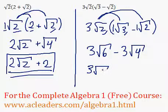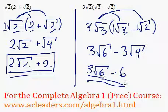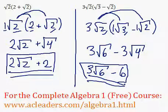3 root 6. Root 6, we can't really do anything to that, because 6 is just 2 times 3. So there are no pairs that we can take out of the root. But over here, we have 3 times root 4. Root 4 is just 2. So 2 times 3 is 6. So that's it. That's as far as it can go. And we have 3 root 6 minus 6 as the answer.